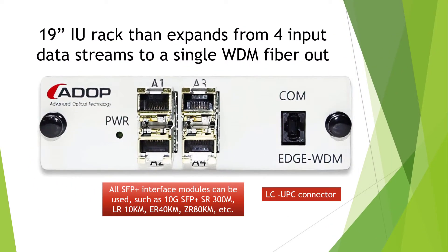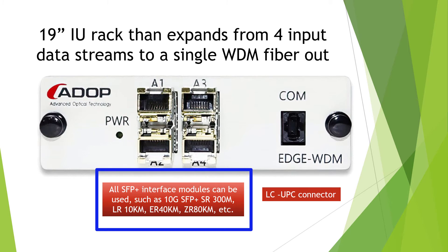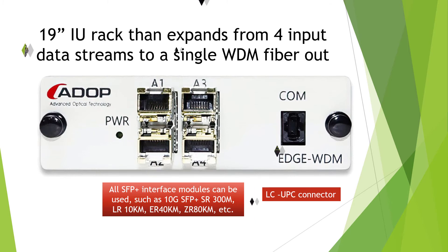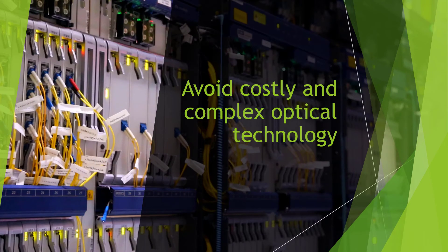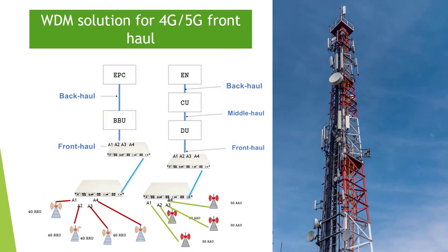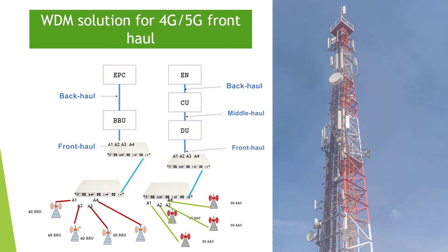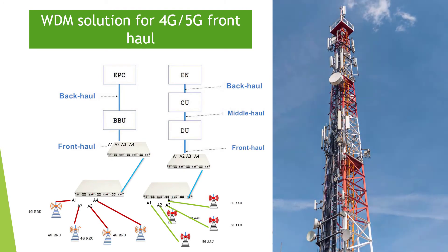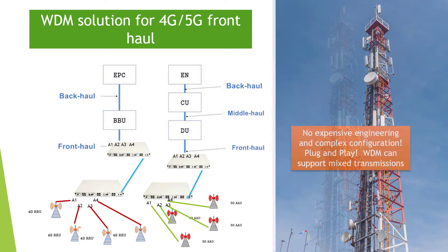The Edge WDM is a 19-inch 1U rack that expands from 4 input to 12 input modules. You can use a variety of optical transceivers as shown in the graphic below. Using the Edge WDM switching platform avoids costly and complex optical technology. WDM provides 4G and 5G fronthaul solutions. No expensive engineering or complex configurations — it's plug and play. WDM can support mixed transmissions.